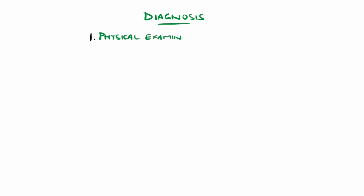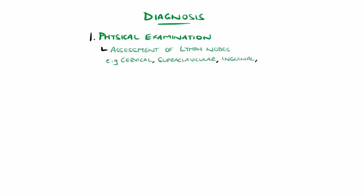Diagnosis involves a physical exam evaluating for lymphadenopathy, generally meaning lymph nodes greater than 1 cm in size, including the cervical, supraclavicular, inguinal, and axillary nodes — some are considered enlarged even at 0.5 cm, such as the supraclavicular nodes. Their size, texture, mobility, and tenderness should be noted, with rubbery, non-tender, immobile nodes without evidence of another cause like infection being particularly suspicious.